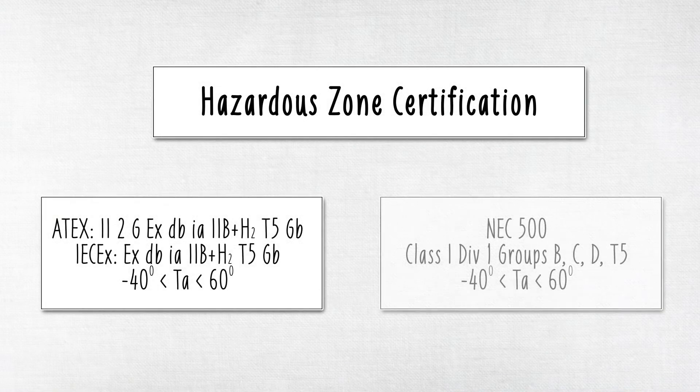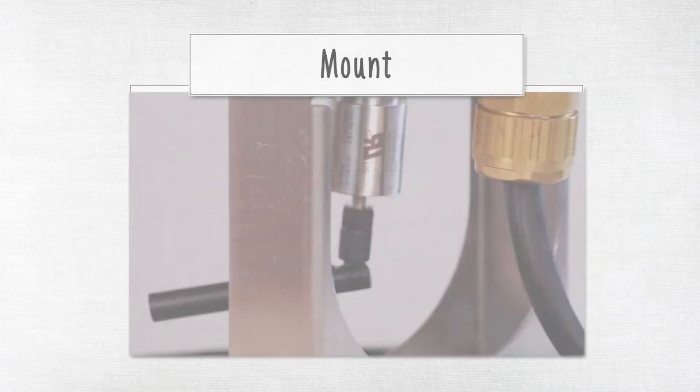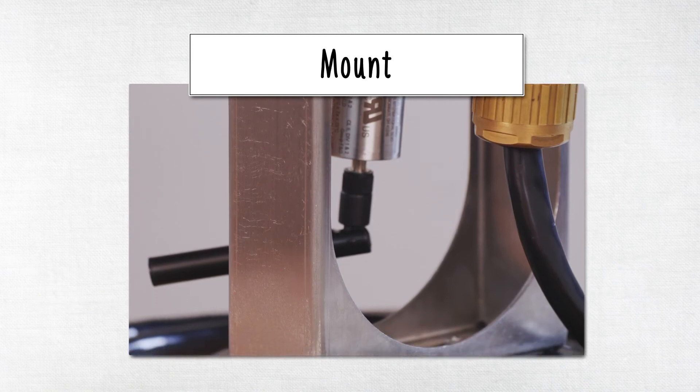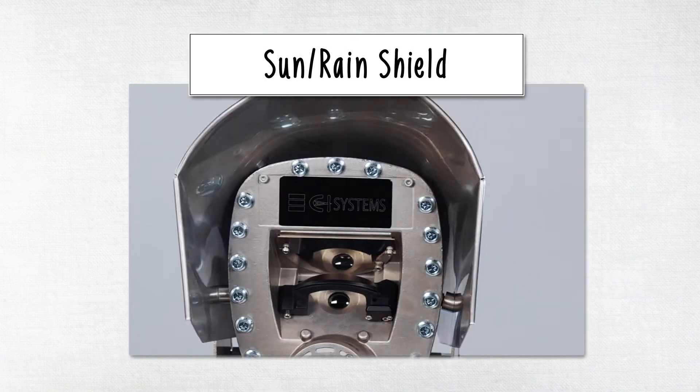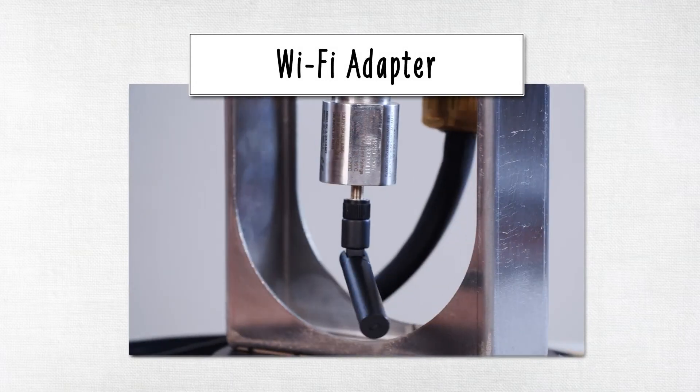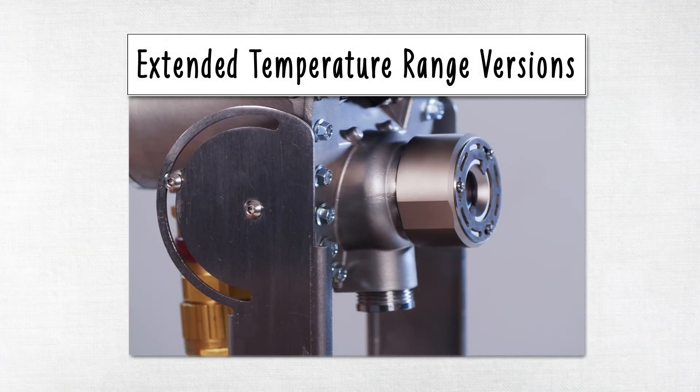METCAM is Zone 1 Division 1 certified as standard. METCAM options include a mount, sun rain shield, Wi-Fi adapter and extended temperature range versions.